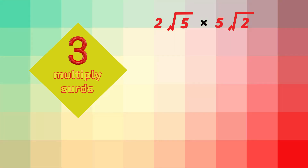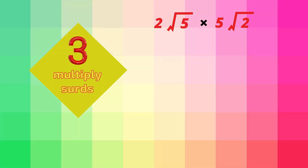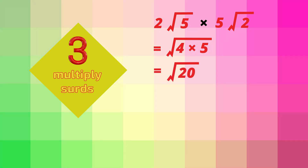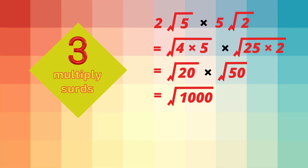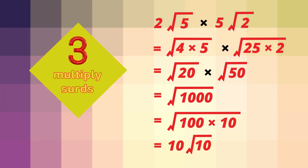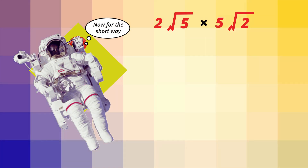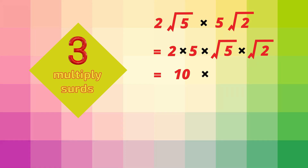Let's simplify 2 root 5 multiplied by 5 root 2. Again we'll do this the long way: 2 root 5 becomes the square root of 4 times 5, which is root 20. And 5 root 2 becomes the square root of 25 times 2, which is root 50. Then root 20 times root 50 is root 1000. Now 1000 is 100 times 10, and the square root of 100 is 10, so the square root of 1000 becomes 10 root 10. The shorter way: multiply the 2 and the 5 to make 10, then multiply root 5 times root 2 to make root 10. The same answer: 10 root 10.